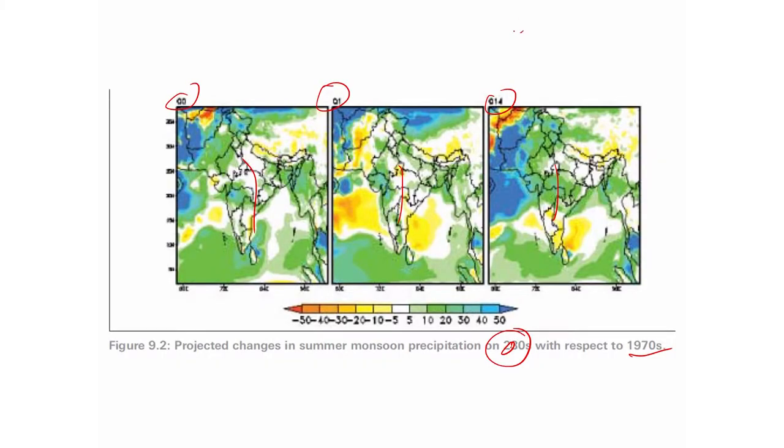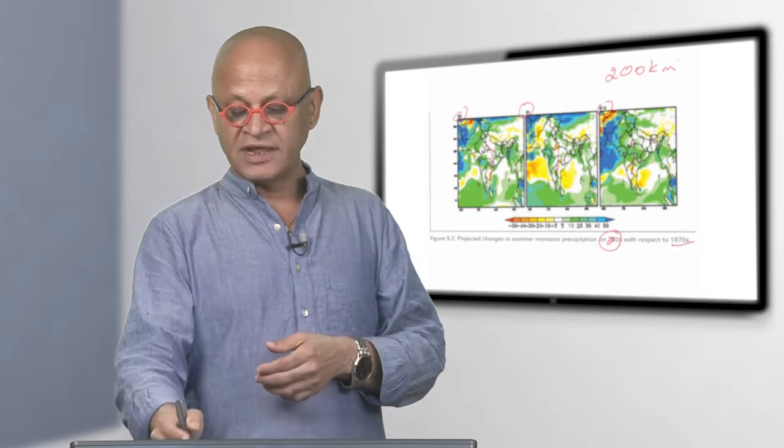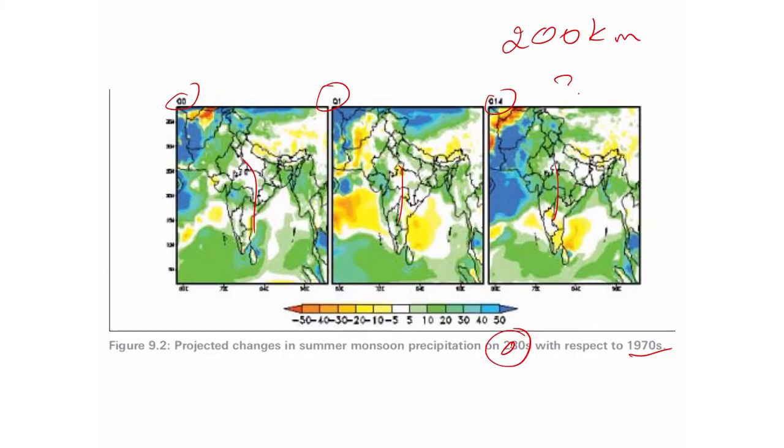The global model may have a resolution of 200 kilometers longitude and 200 kilometers latitude, whereas a regional model like this typically would have something like 30 kilometers or even less, maybe down to 10 kilometers. There is some indication that the topography like the western ghats, the Himalayas and so on will be better resolved.